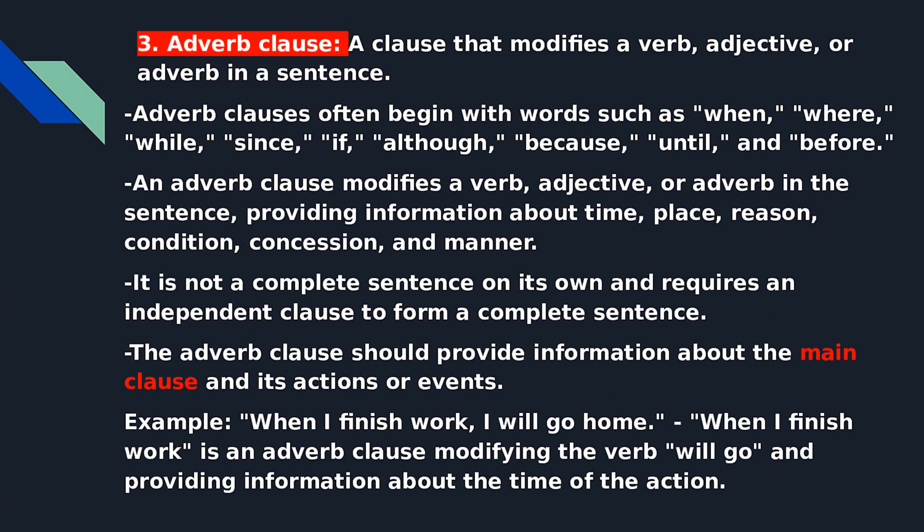Now let's discuss the adverb clause, which is a clause that modifies a verb, adjective, or adverb in a sentence. Adverb clauses often begin with words such as: when, where, while, since, if, although, because, until, and before. An adverb clause modifies a verb, adjective, or adverb in the sentence, providing information about time, place, reason, condition, concession, and manner. It is not a complete sentence on its own and requires an independent clause to form a complete sentence. Example: "When I finish work, I will go home" — "when I finish work" is an adverb clause modifying the verb "will go" and providing information about the time of the action.